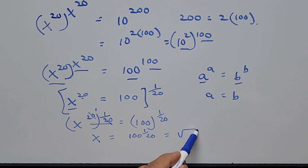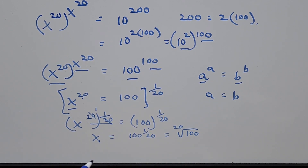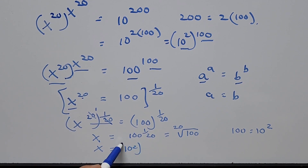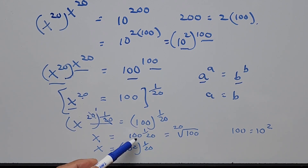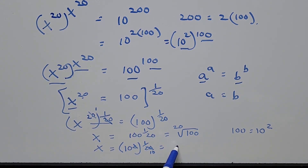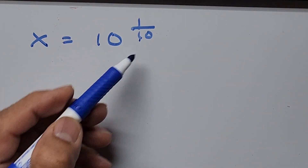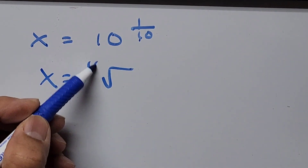So x equals 100 raised to 1 over 20, or the 20th root of 100. Since 100 can be written as 10 squared, we have x equals 10 squared raised to the power of 1 over 20. The exponent becomes 2 divided by 20, which is 1 over 10. So x equals 10 to the power of 1 over 10, or equivalently the 10th root of 10.